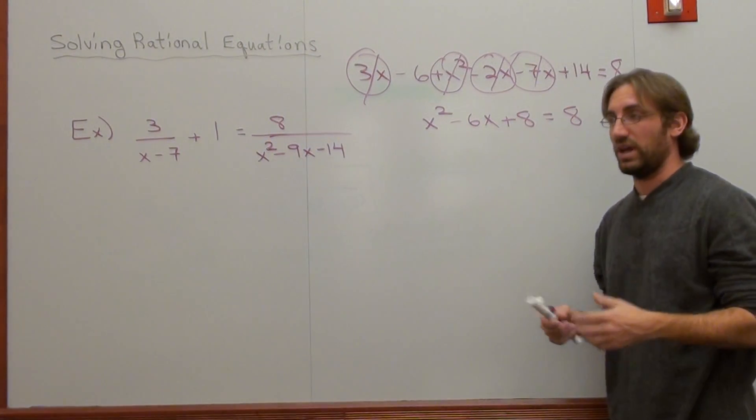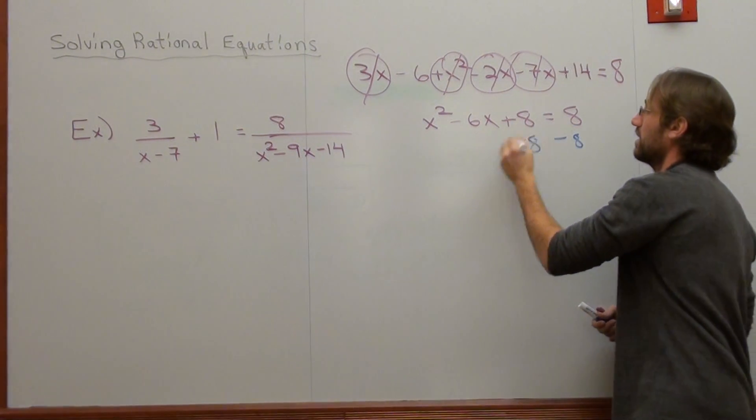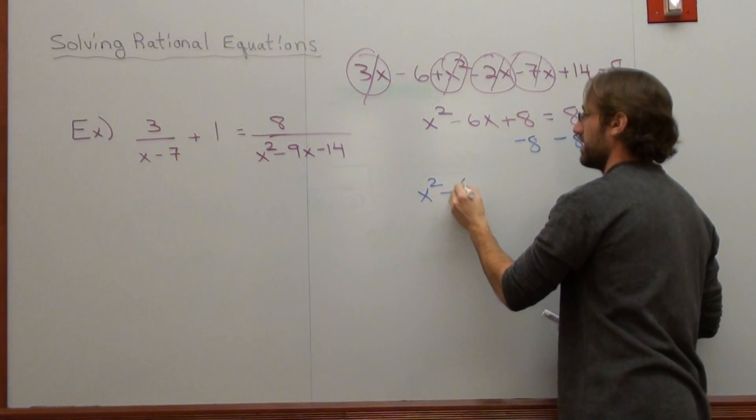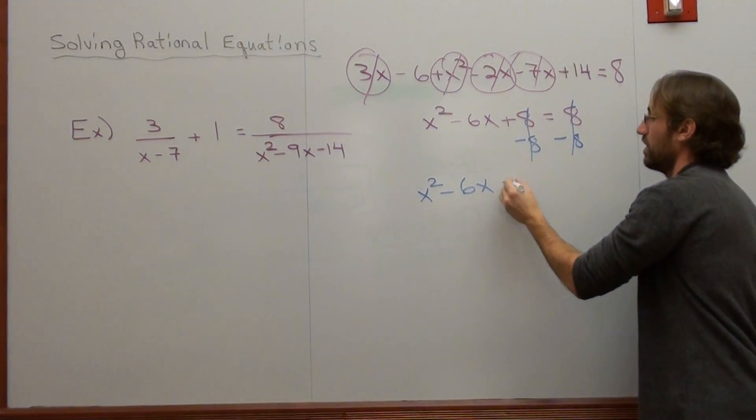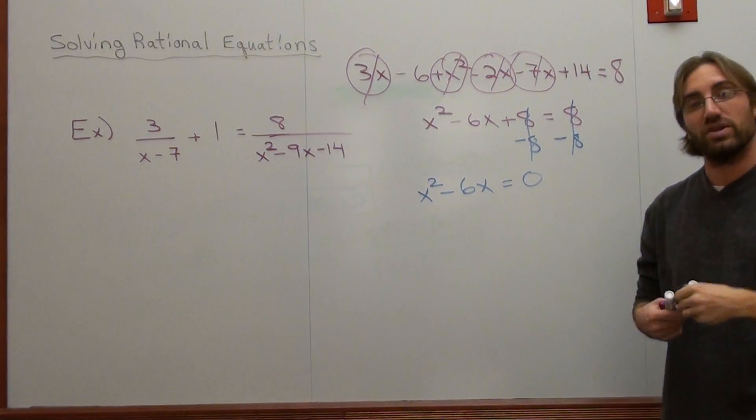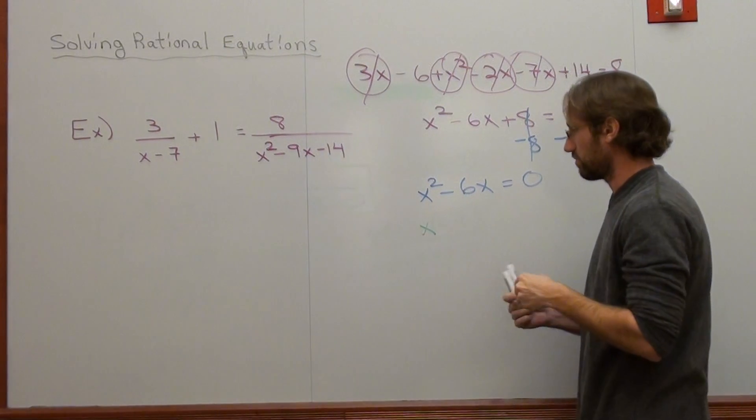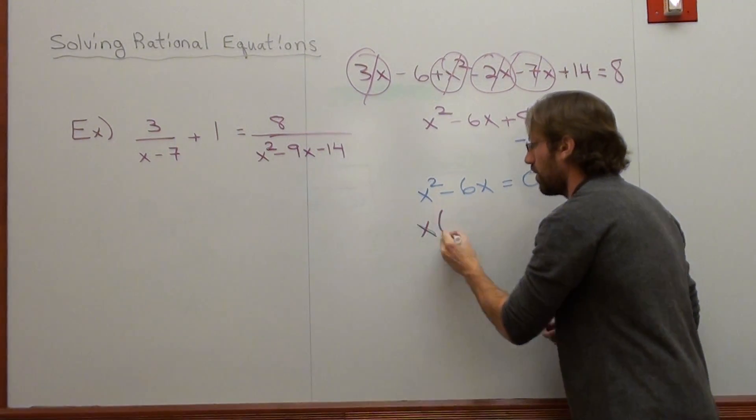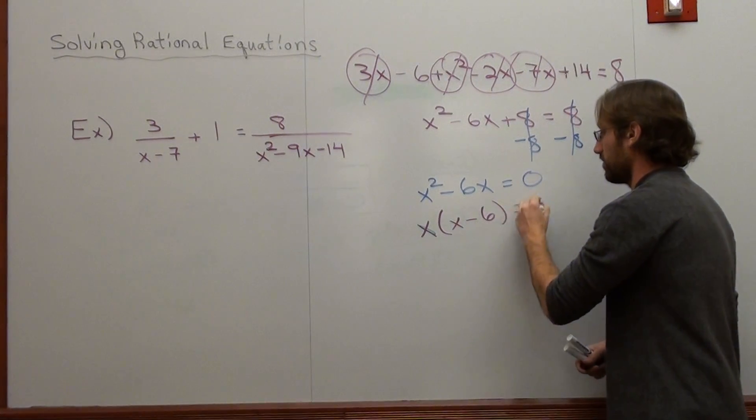Get it in standard form. Get it set equal to 0. Subtract 8 on both sides. x squared minus 6x, 8 plus 8, equals 0. Factor out the GCF, which is x. And when I factor out the GCF, I've got x minus 6 left over. Equals 0.